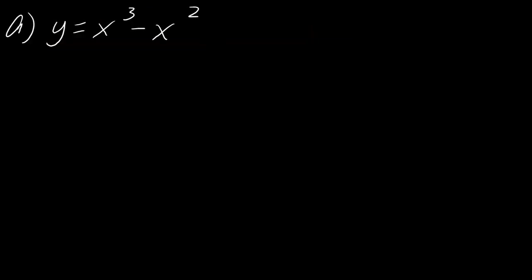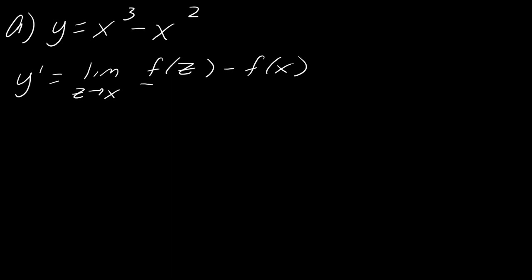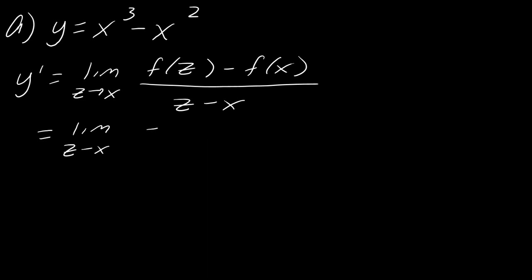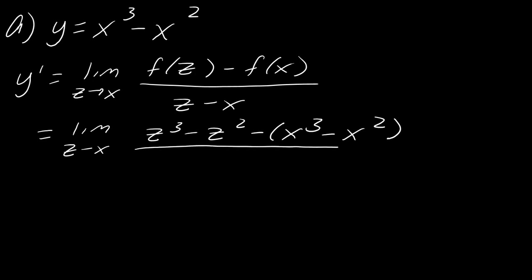Let's start by finding the derivative of this first function. Remember, this is going to be the limit as z approaches x of f(z) minus f(x) over z minus x. So plugging everything in, I get z cubed minus z squared, minus x cubed minus x squared, all over z minus x.